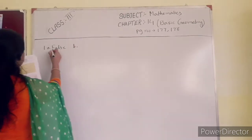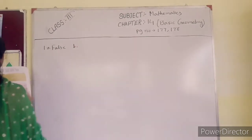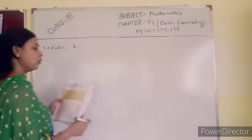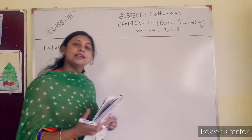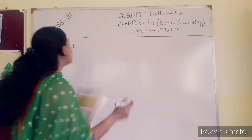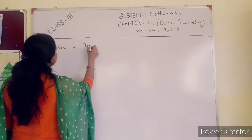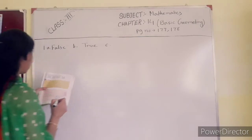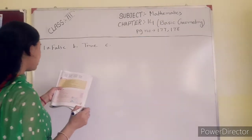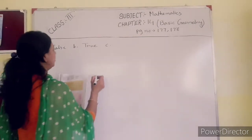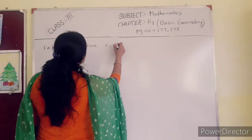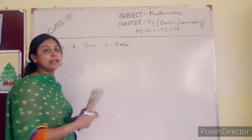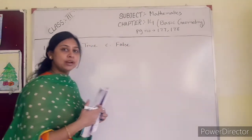Now B: 'A dice is an example of a cube.' This one is true. Now C: 'A balloon is an example of a cylinder.' Wrong, this one is false. A balloon is an example of a sphere.